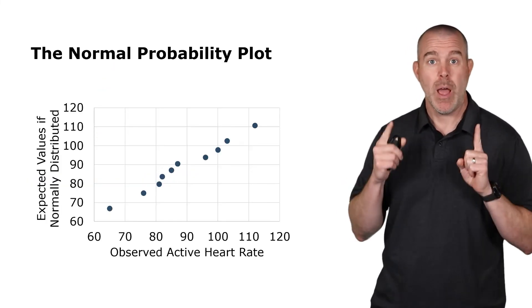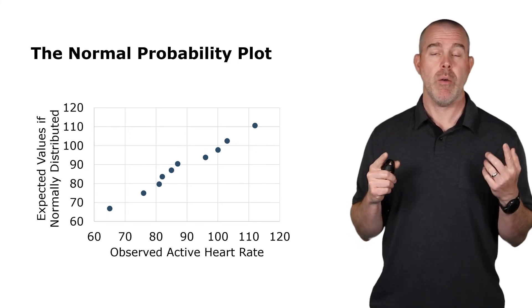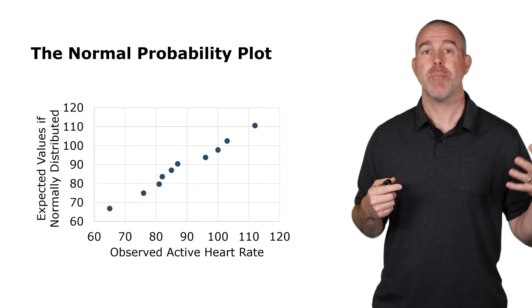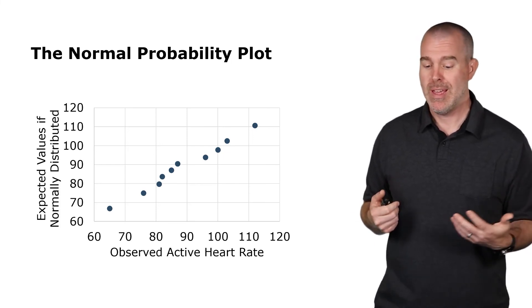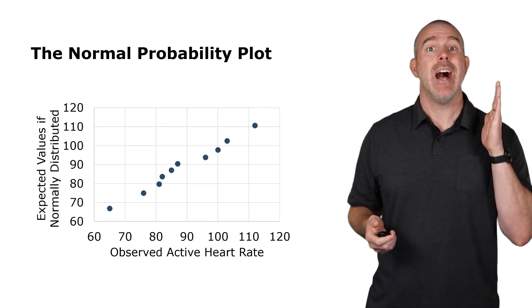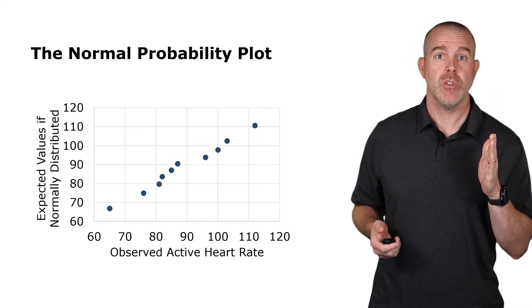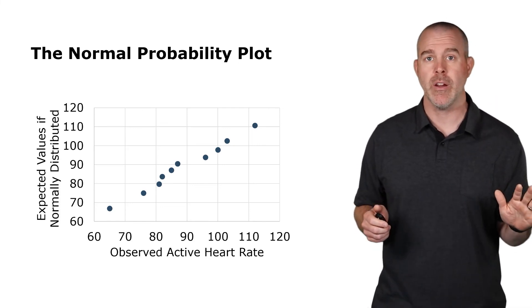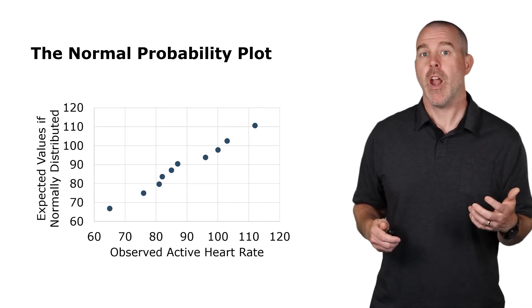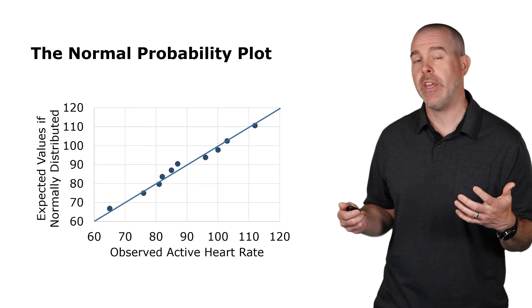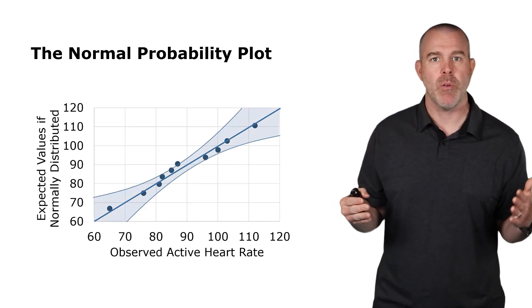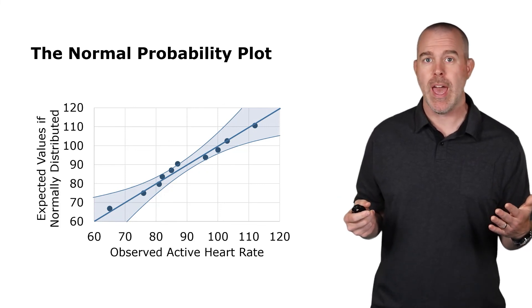And we would expect them to be equal, right? We would expect the actual x value and this expected if it were normal to be equal. And this is what the graph looks like. What we're looking for here is a line or something very close to a line. It doesn't have to be perfectly linear, but especially in the middle, we want it to be very close to a line. In our particular case, it's pretty linear. Some programs actually add like a band, like a confidence band, where as long as you're within that band, it's okay.